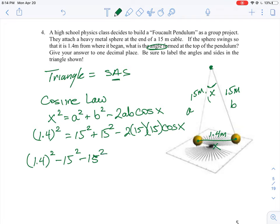And that's going to be equal to negative 2 times 15 times 15 times cos X. Now we have to divide by the number in front of cosine X. So cosine X, think of it like a variable, okay? So I have to divide both sides by the numbers that you have there. So it's going to be the negative 2 times 15, just like that.